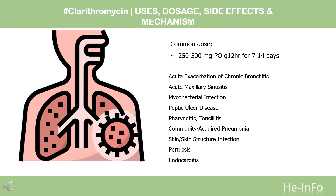For pharyngitis and tonsillitis: 250 mg PO every 12 hours for 10 days. For community-acquired pneumonia, indicated for mild to moderate infections caused by Haemophilus influenzae, Haemophilus parainfluenzae, Moraxella catarrhalis, Mycoplasma pneumoniae, Streptococcus pneumoniae, or Chlamydophila pneumoniae: 250 mg PO every 12 hours for 7–14 days. Extended release: 1,000 mg PO once daily for 7 days. For skin/skin structure infection: 250 mg PO every 12 hours for 7–14 days.